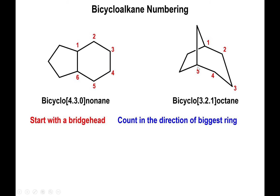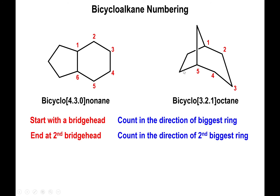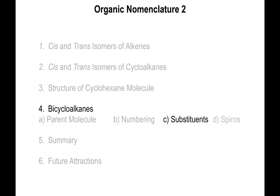After reaching the second bridgehead, you move in the direction of the second biggest ring. For the structure on the left, you continue going left: position seven, position eight, position nine. For the structure on the right, you could go left or on top, but the ring with the most carbons goes to the left, so you continue left — ending up with positions six and seven. Then, if you do have a third set of carbons above the bridge heads, that becomes the place where you continue counting, so that position becomes position eight. This is how you number your bicycloalkanes.